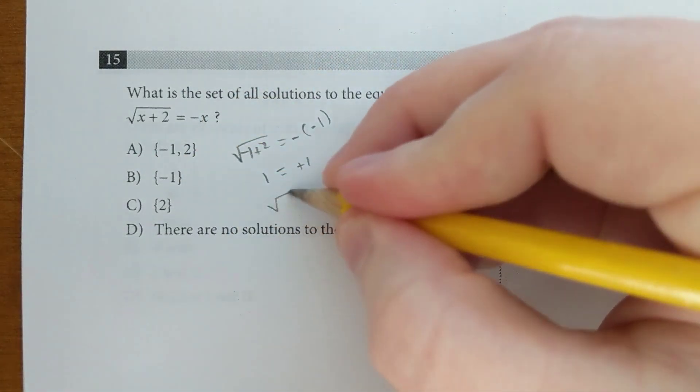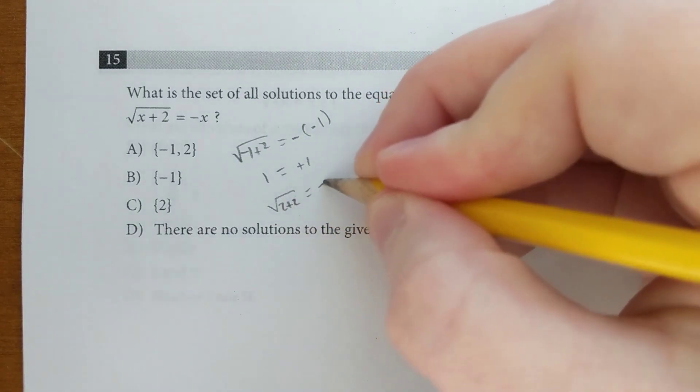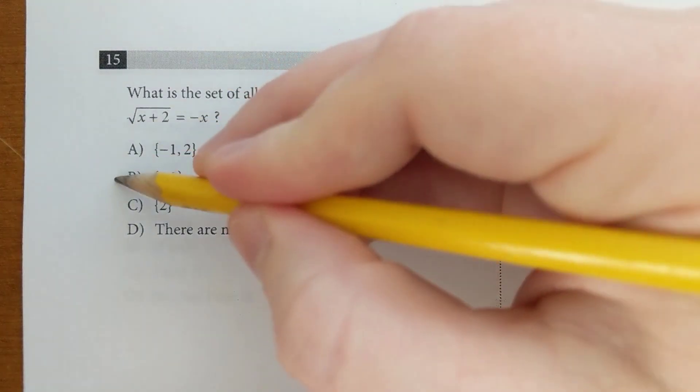But when you go to plug in 2, you get the square root of 2 plus 2 equals negative 2. That's false, so the answer's B.